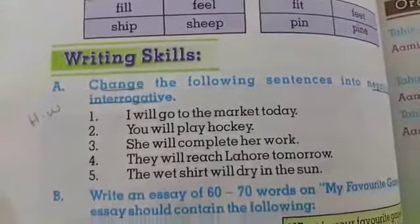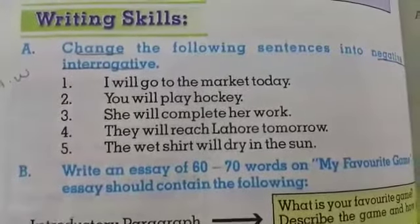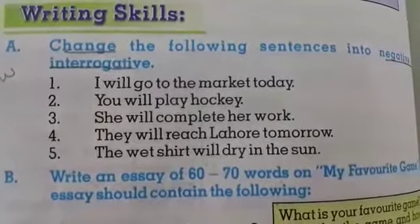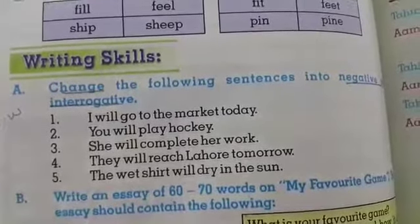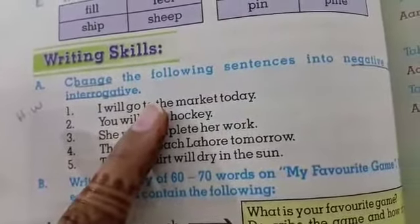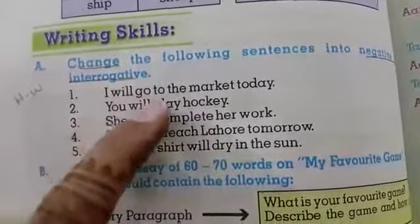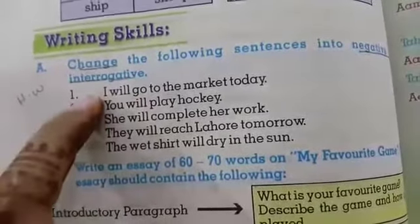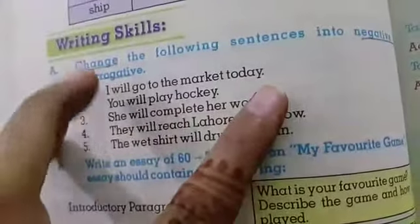Now, writing skill: change the following sentences into negative and interrogative. The sentences are in simple future tense from page number 82. Number one: 'I will go to the market today.' To make it negative, simply add 'not' after 'will.' To make it interrogative, write 'will' at the start, followed by the subject, then add a question mark at the end.